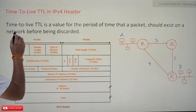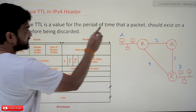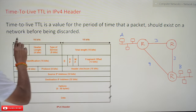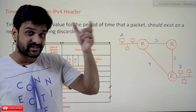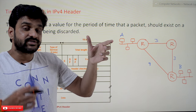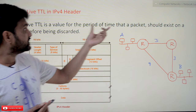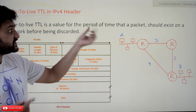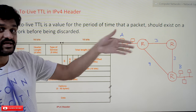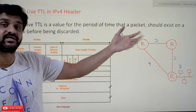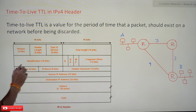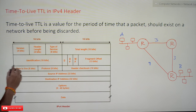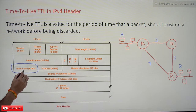So what is Time to Live? TTL is a value for the period of time that a packet should exist on the network before being discarded. The value provided in the Time to Live field decides the period of time that a packet should stay in the network — after crossing that limit, it will get discarded. This is the first field of the third row of the IPv4 header.